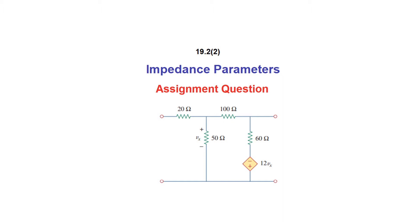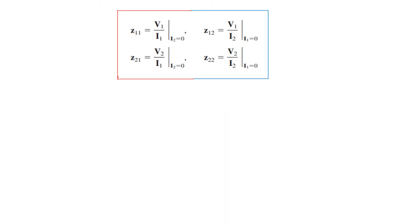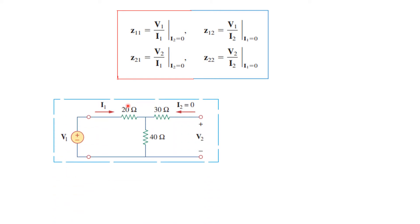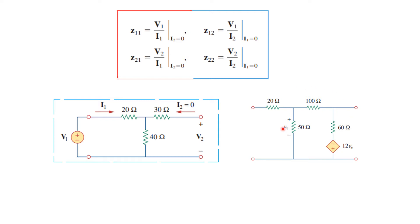Bismillahirrahmanirrahim. This is another assignment question on impedance parameters from a friend from Nigeria. Recall that in the impedance parameters we have to find four quantities: Z11 and Z21 when I2 is 0, and Z12 and Z22 when I1 is 0. Earlier we solved a simpler version of this type of problem, but the current problem has a more difficult network, so we have to concentrate more. However, we will follow the same principle.